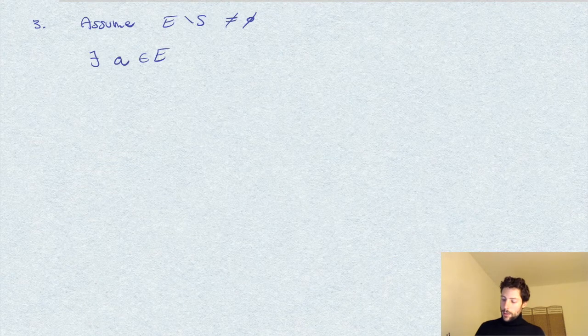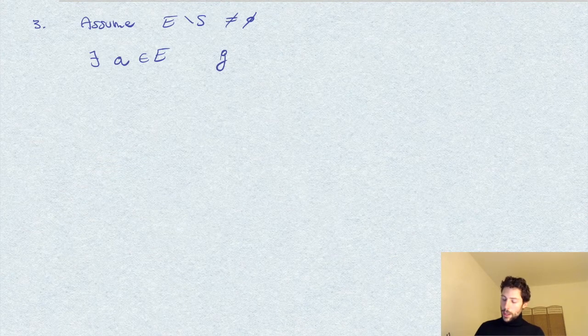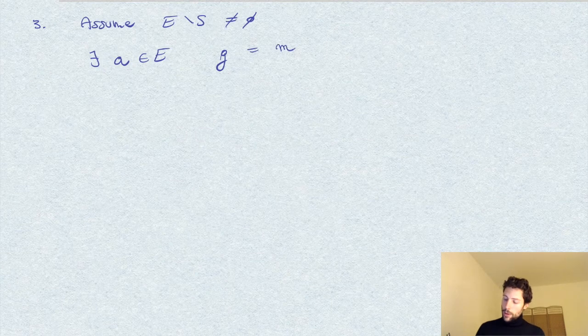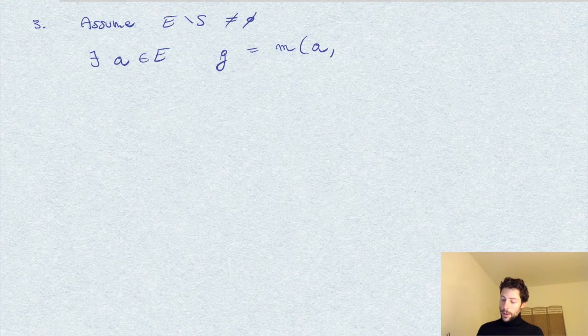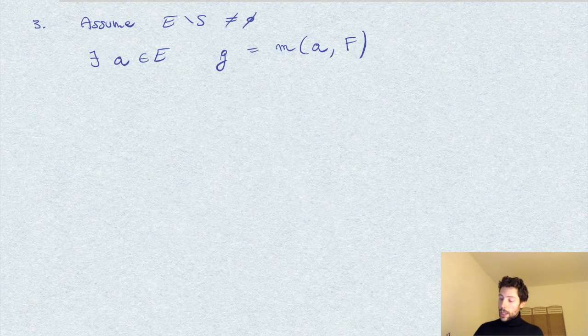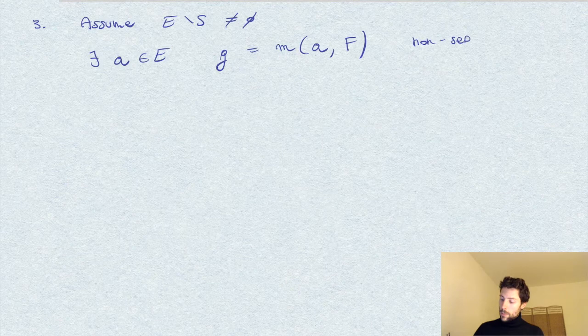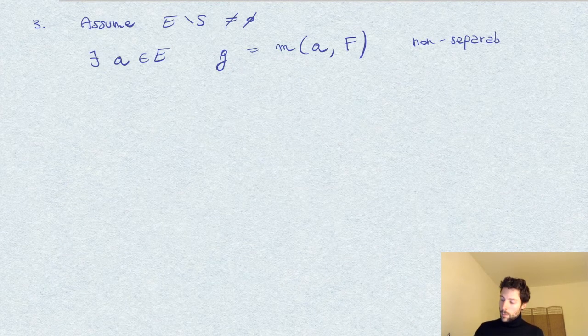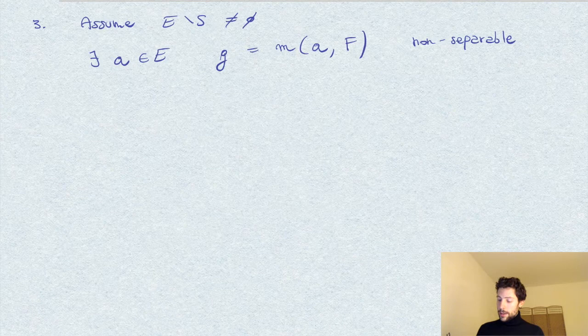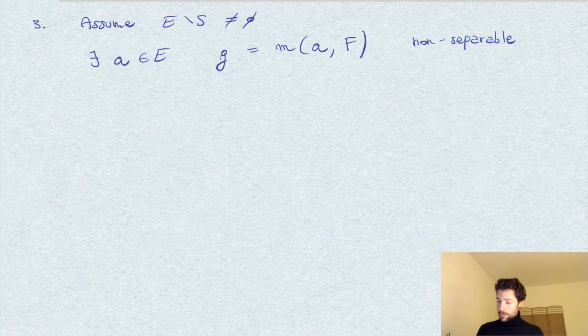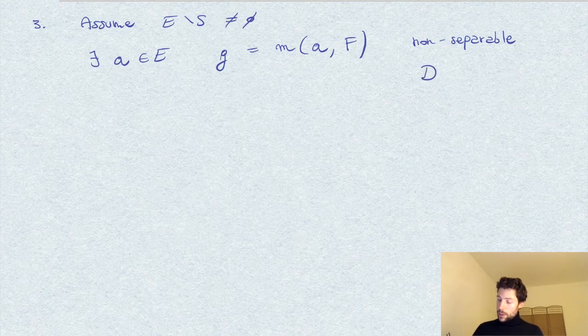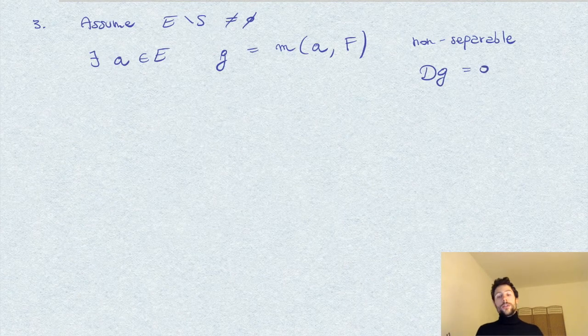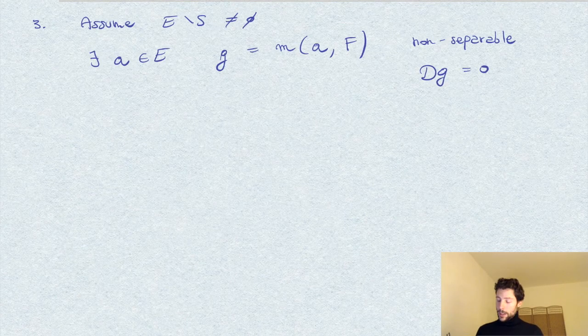And reasoning with minimal polynomials, let G be the, let me abbreviate with this notation, the minimal polynomial, this is what I mean of A over F. So, what we know is that this would be non-separable, because we are taking A outside of S. And so, in terms of derivative, this means that DG, the derivative of G is, vanishes, is zero.